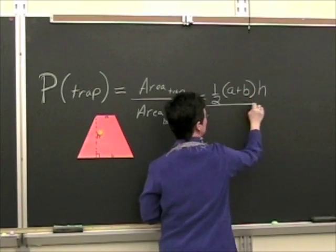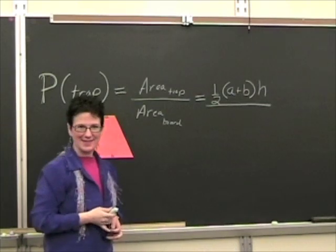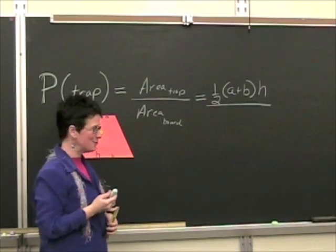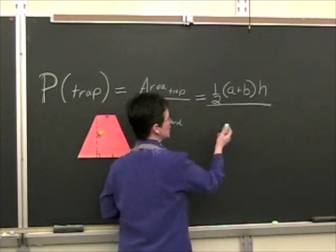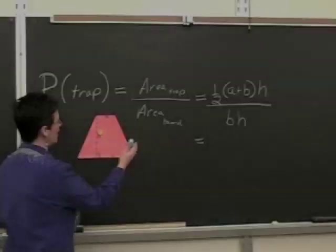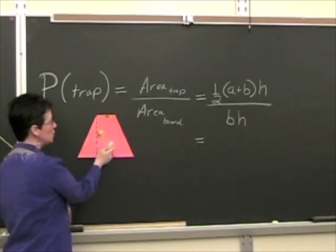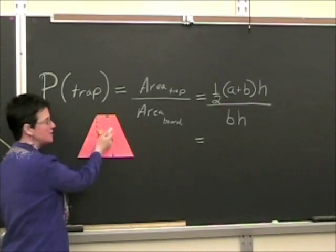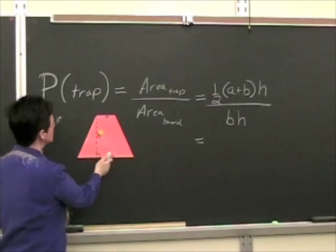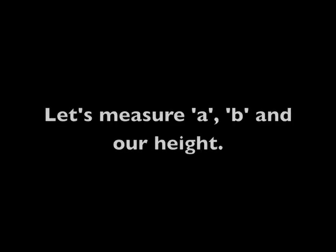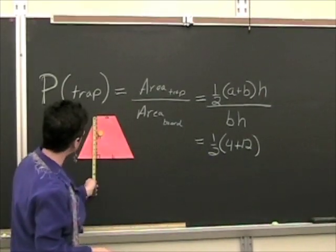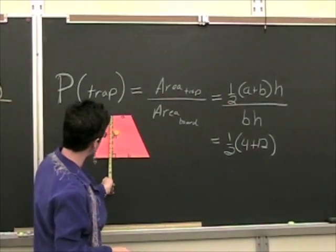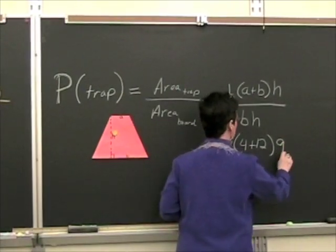The area of a trapezoid is one half times the quantity a plus b close quantity times h. And the area of the blackboard is just base times height. Remember, on a trapezoid the two bases are usually not the same length, so we call them a and b. This is 12 and the height is the perpendicular distance between those two bases and this one is 9. And of course these are inches.